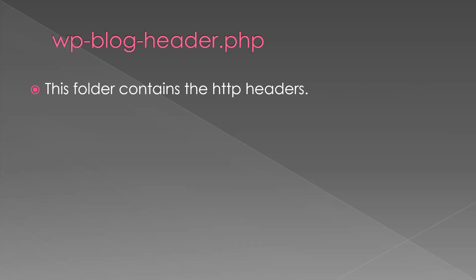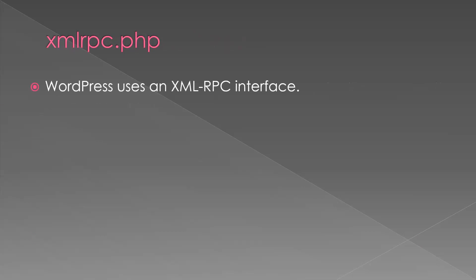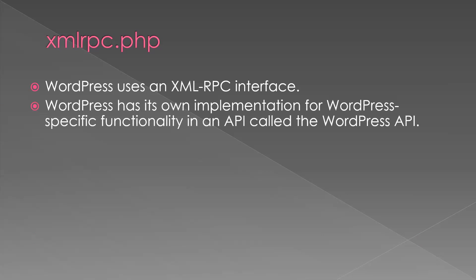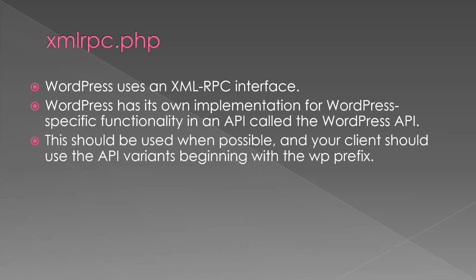Next is wp-blog-header.php, which handles the HTTP headers. HTTP means Hypertext Transfer Protocol. Next is xmlrpc.php. This file stores the WordPress XML-RPC interface. WordPress uses an XML-RPC interface and has its own implementation for WordPress-specific functionality in an API called the WordPress API. API means Application Programming Interface. Different WordPress-specific functionalities are provided and stored in this API.